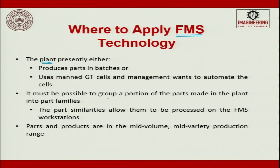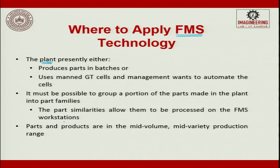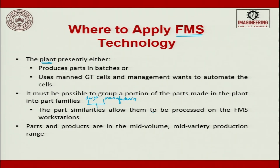It must be possible to group a portion of the parts made in the plant into a part family, as we studied in group technology. The part similarity — in terms of design or manufacturing — allows them to be processed on the FMS workstation. Parts and products are in the mid-volume, mid-variety production range, which is where you can think of going for FMS.